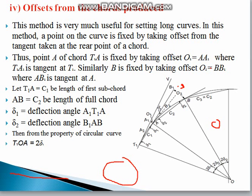Next, offset from the chord produced. This method is very useful for setting out the curve. A point on the curve is fixed by taking the offset from the tangent at the rear point of the chord. The chord T1A is the first chord, and the offset O1 equals AA1, where T1A1 is the tangent at the curve at point T1.